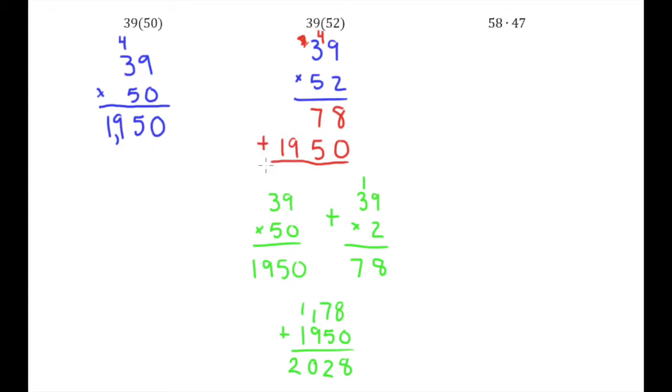And then just like we did down here in this long way of going about the problem, I'm going to add up the 2 rows. So I have 8, 7 plus 5 is 12, 1 plus 9 is 10, and then 2. So 2028, either way you do it.